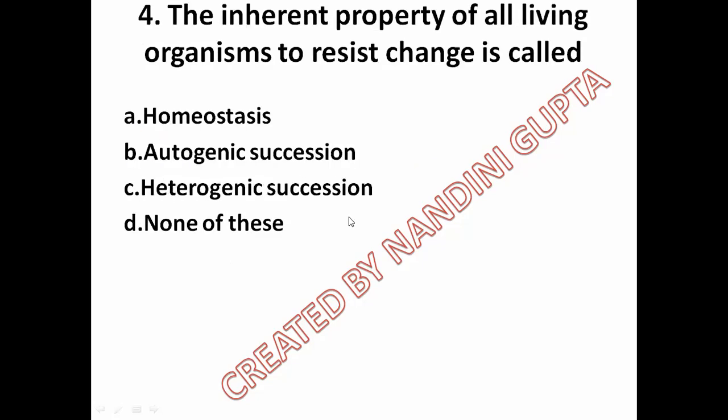The inherent property of all living organisms to resist change is called option A homeostasis, option B autogenic succession, option C heterogenic succession, option D none of these.